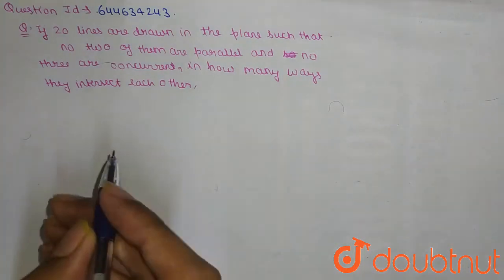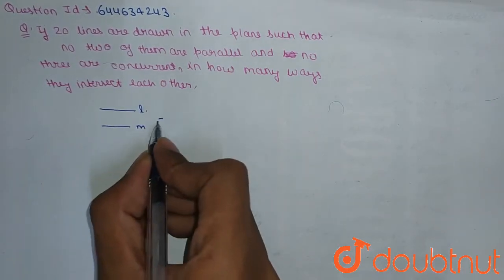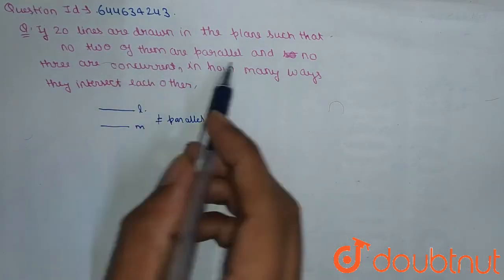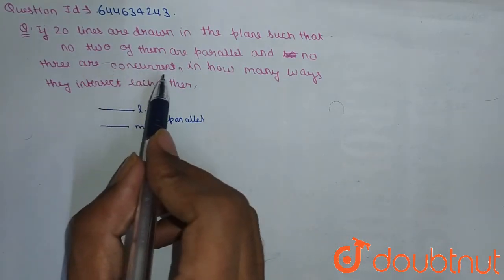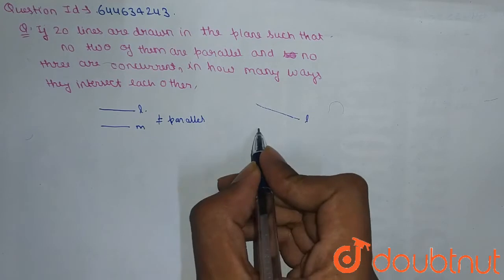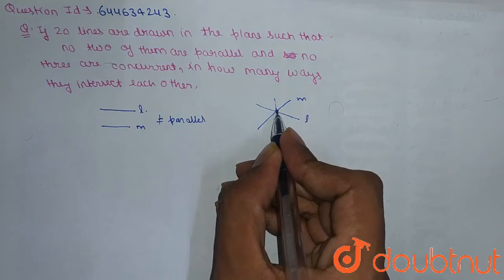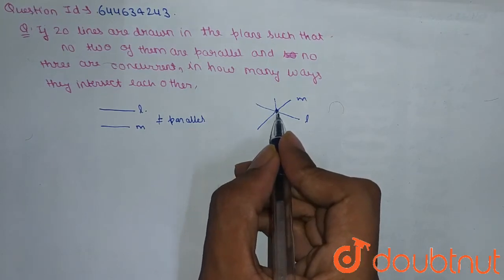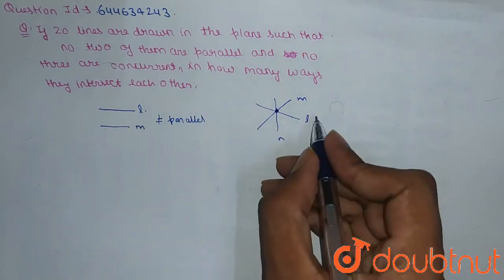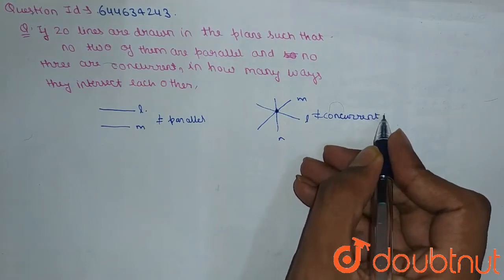We have been given two conditions. First, two lines l and m are not parallel. Second, no three are concurrent. Concurrent lines are those which meet at the same point. So if lines l, m, and n all meet at the same point, they are concurrent. But since no three lines are concurrent, that situation is ruled out.